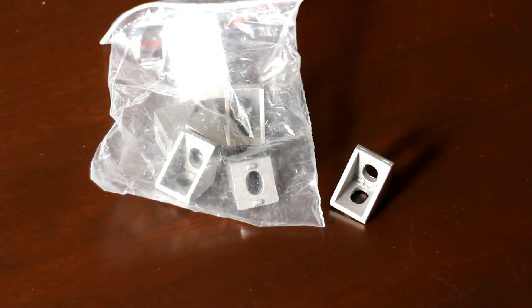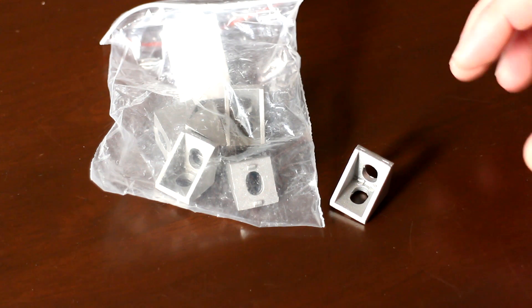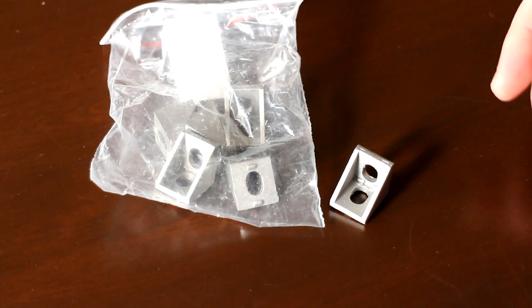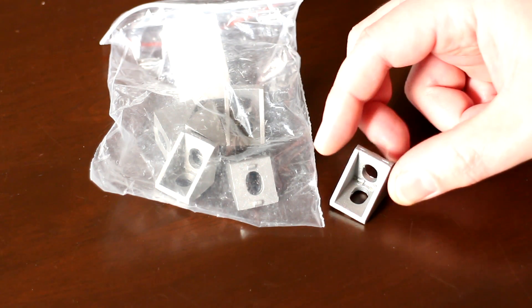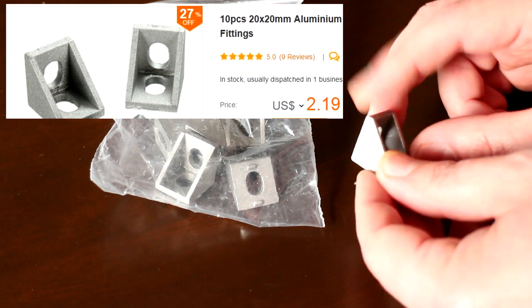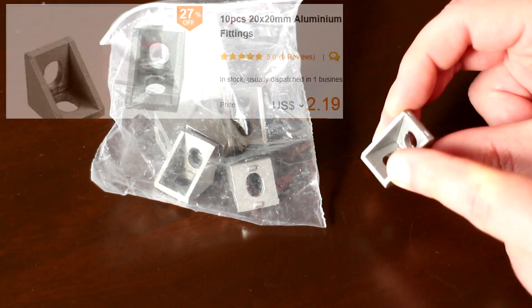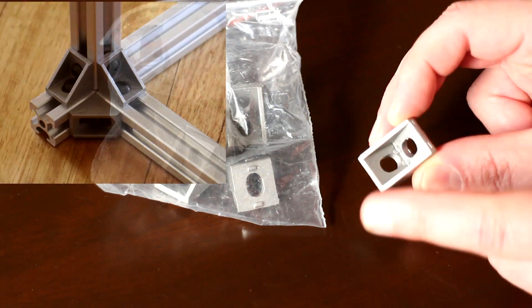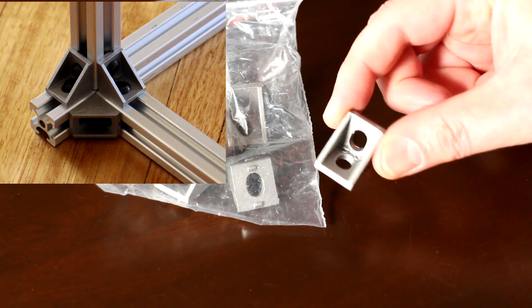To join the pieces of cut aluminum extrusion together, I didn't want to print corner brackets because I was worried that they wouldn't provide the stiffness and rigidity that you need within the frame. So I've chosen to buy these aluminum furniture brackets. These are 90 degree angled, they come in bags of 10, and they are dirt cheap. I've used these on the frame and they do make the frame rock solid once you've used these on every single corner.